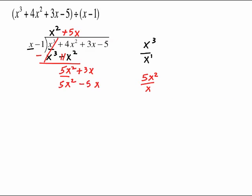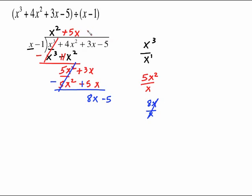Draw the line. Change both those signs. 5x squared and negative 5x squared cancel out — that's what we want. 3x plus 5x is 8x. Bring down your next term and begin again. 8x divided by x: the x's cancel and we just get a plain old 8.